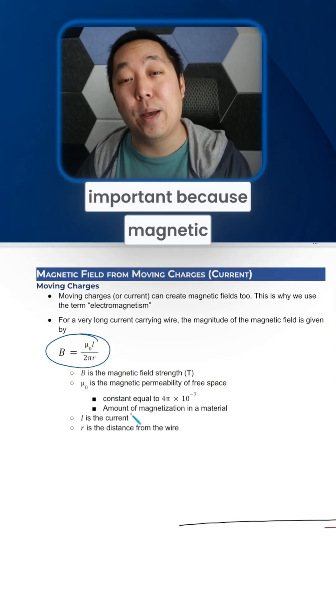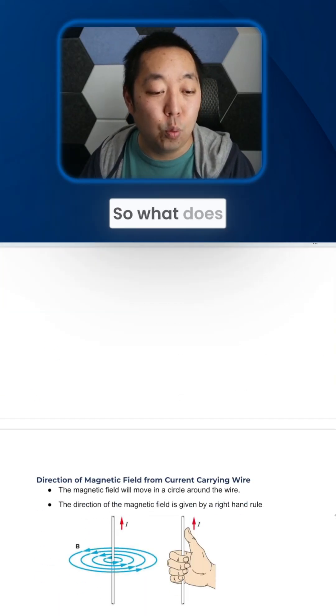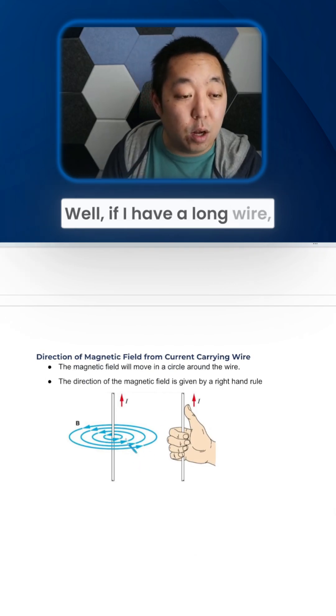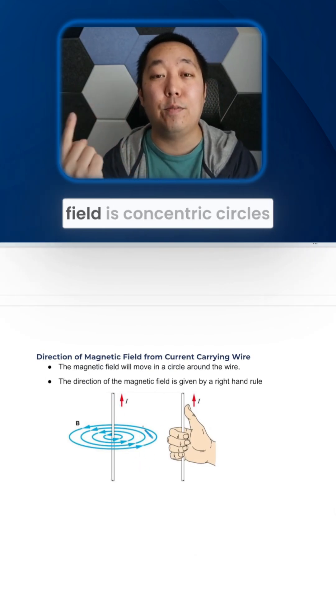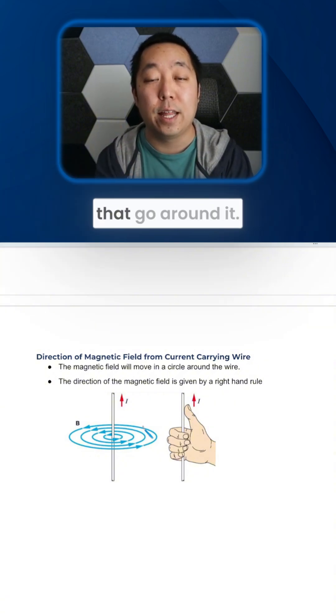Now, the direction is really important because magnetic fields are directional. So what does the direction look like? Well, if I have a long wire, it turns out there are a bunch of the magnetic field is concentric circles that go around it.